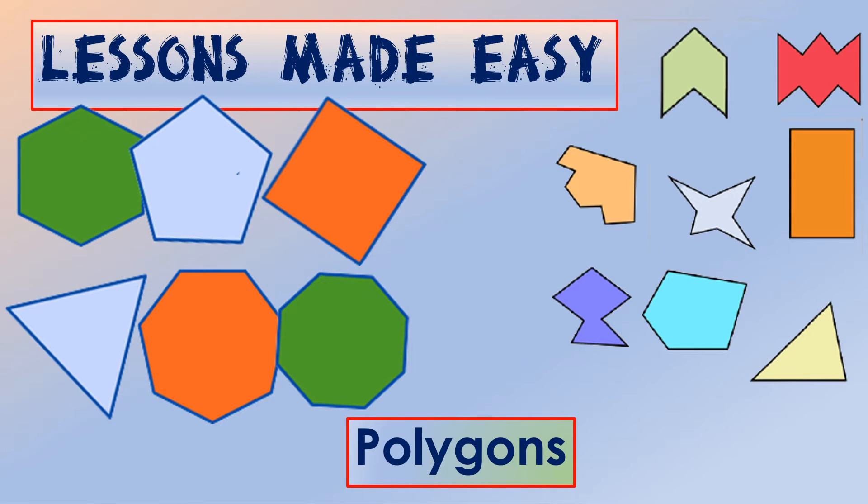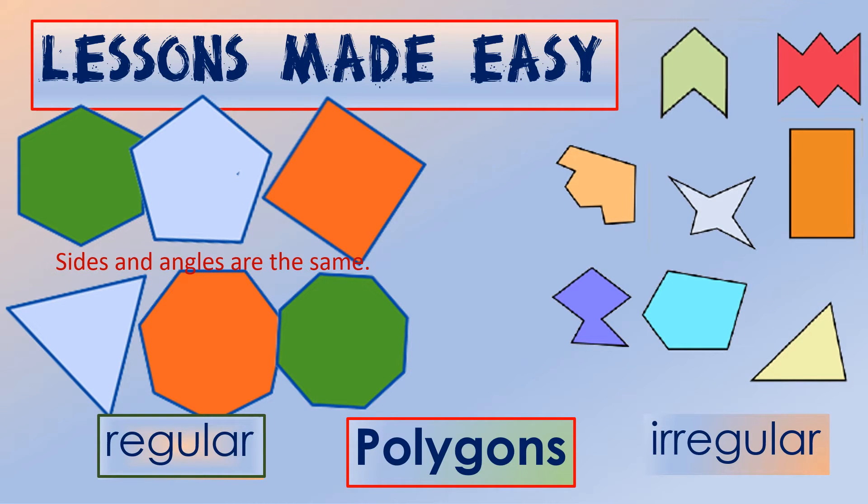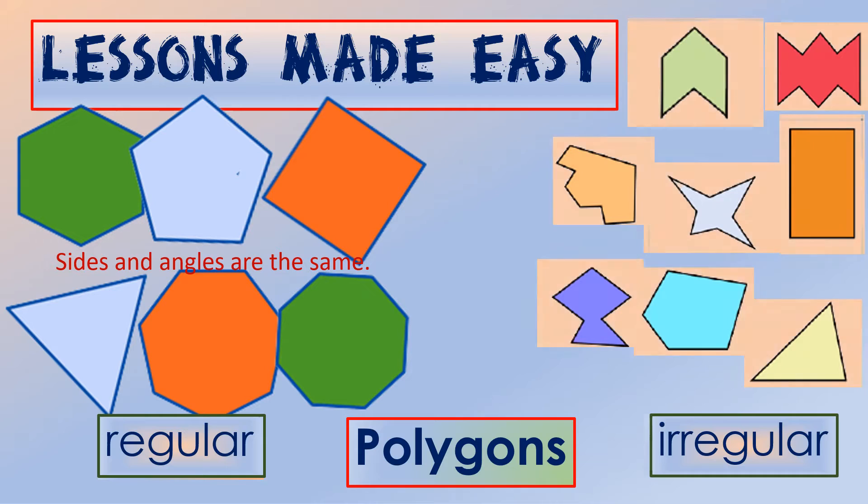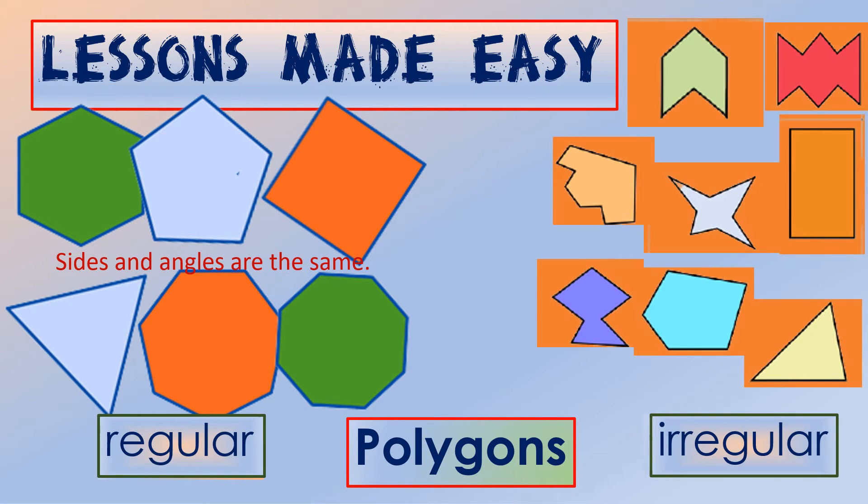Polygons can be regular or irregular polygons. But what is the difference between a regular polygon and an irregular polygon? Well, a polygon is called regular if it has equal sides and angles, which means the length of sides and the size of the angles are the same. Unlike an irregular polygon, the sides and the angles are different.